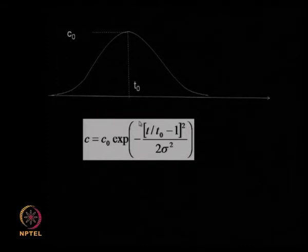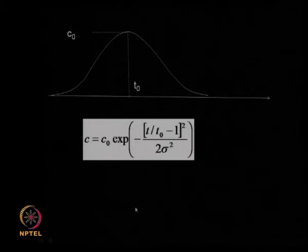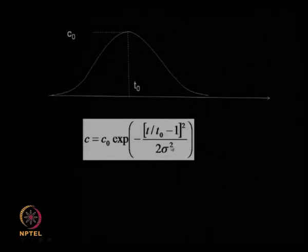Let us continue with the topic of chromatography and how to model this particular packed bed system and what are the issues while modeling. Typically, if you look at a chromatography output, you are going to get a Gaussian type of peak leaving the column. This is called the retention time, t-naught, and this is the maximum concentration it reaches. For a Gaussian distribution, the equation is c equal to c-naught times exponent of minus (t/t-naught minus 1) squared divided by 2 sigma squared.